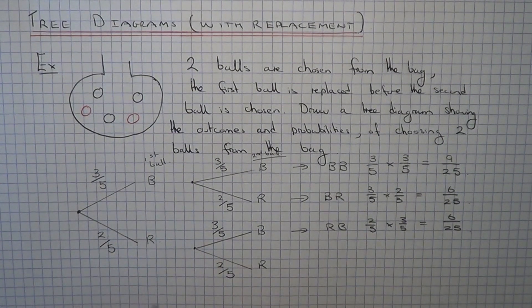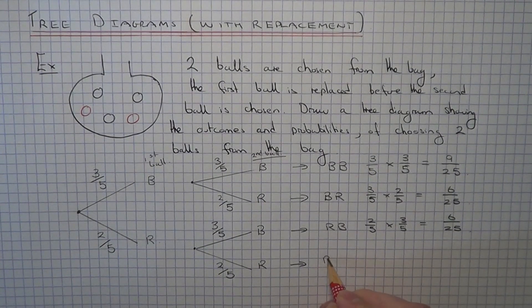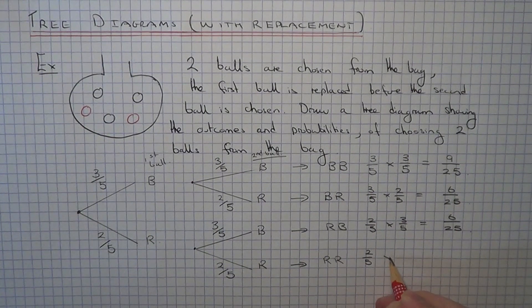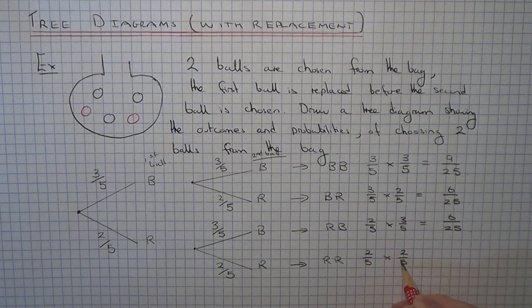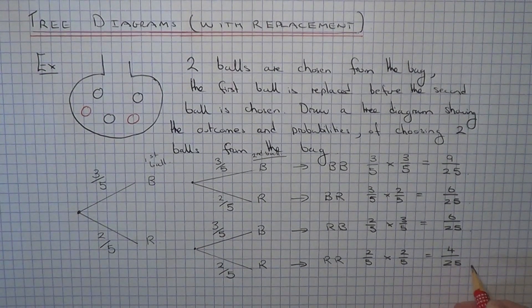And our bottom route of our tree diagram would be to get a red ball. So this is 2/5 times 2/5, which is 4/25.